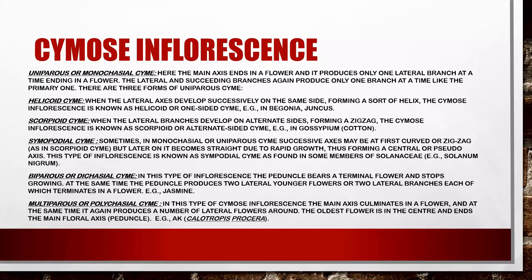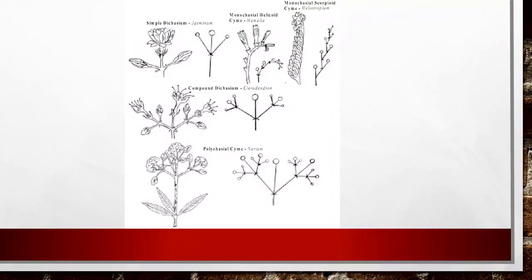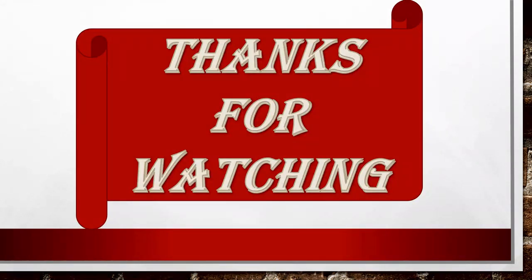In the figure of cymose inflorescence, you can see: simple dichasium as in jasmine, monoaxial helicoid form showing a helical structure on one side, compound dichasium which is more complex with many branches, and polyaxial cyme showing multiple levels of branching. I hope this will be helpful for you. Thank you so much for watching — make sure to subscribe, comment, and like. Bye bye.